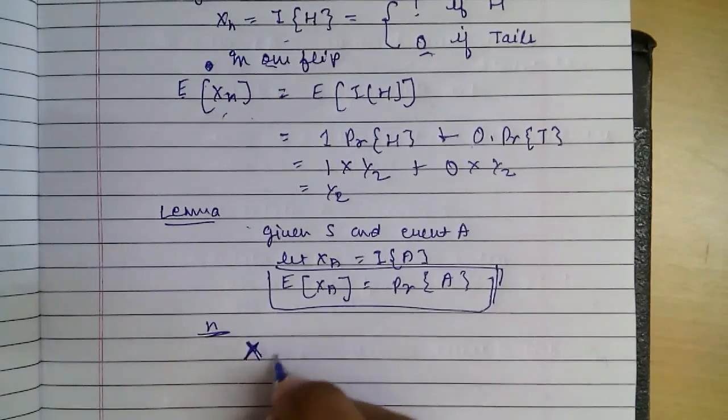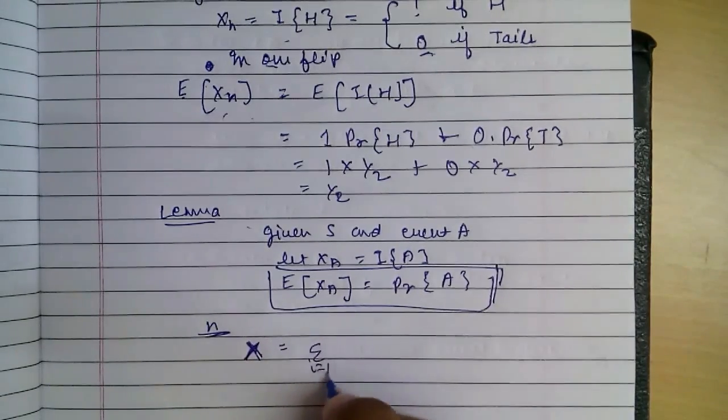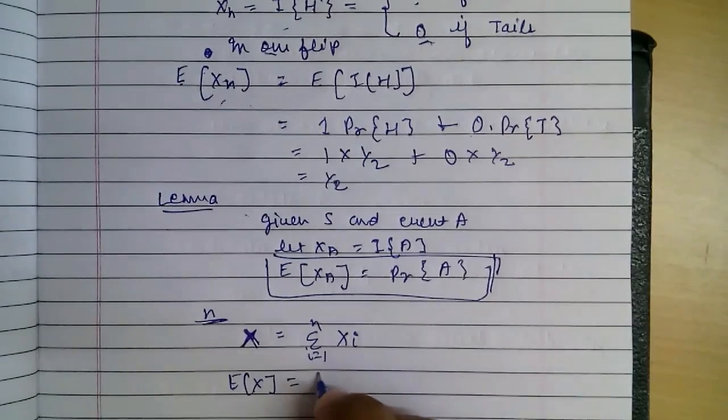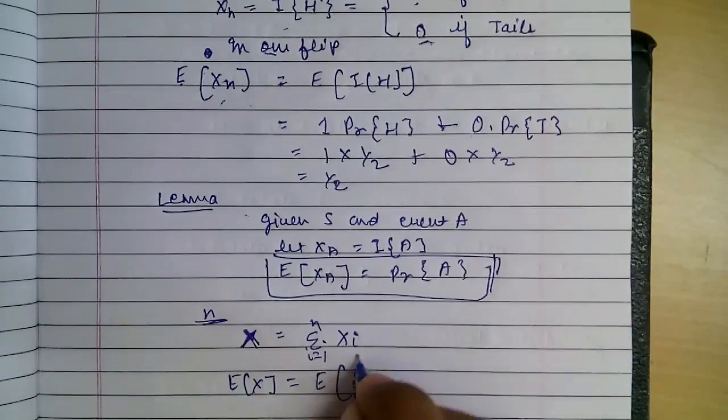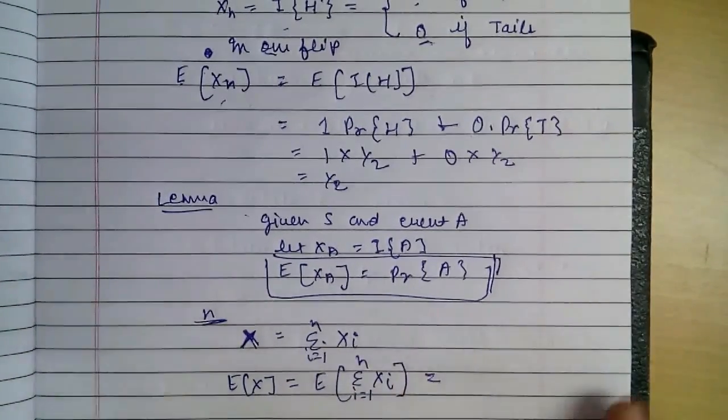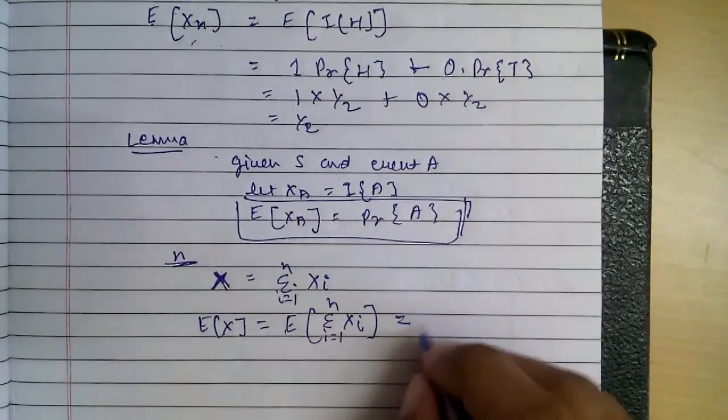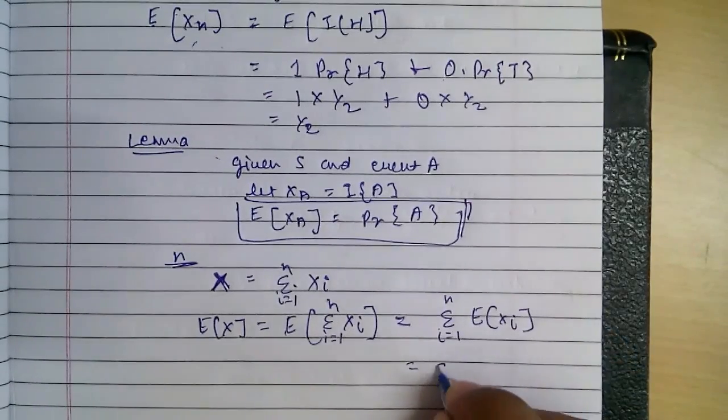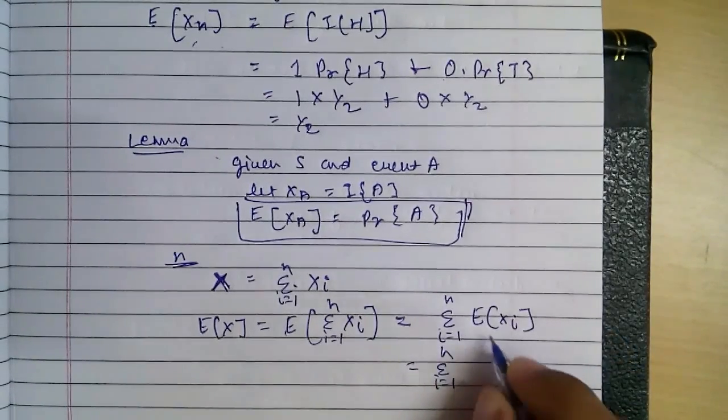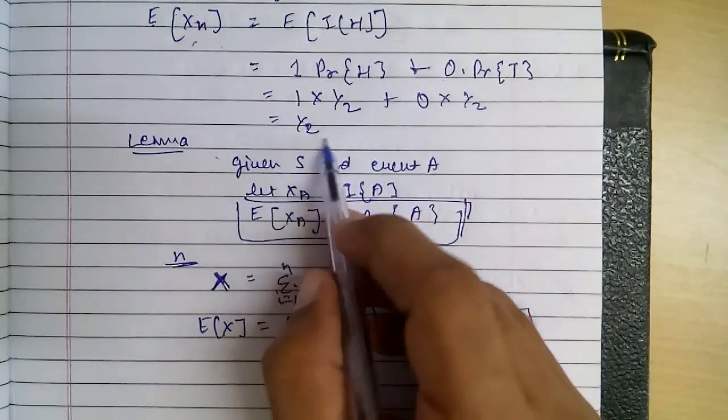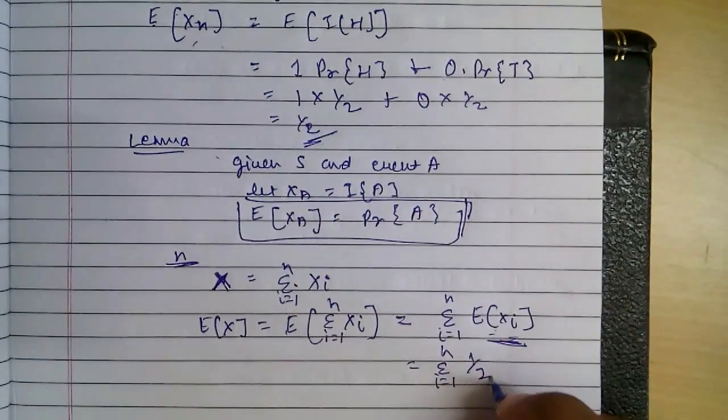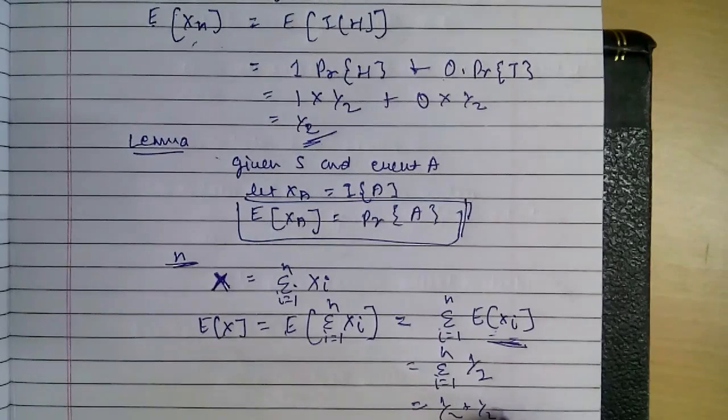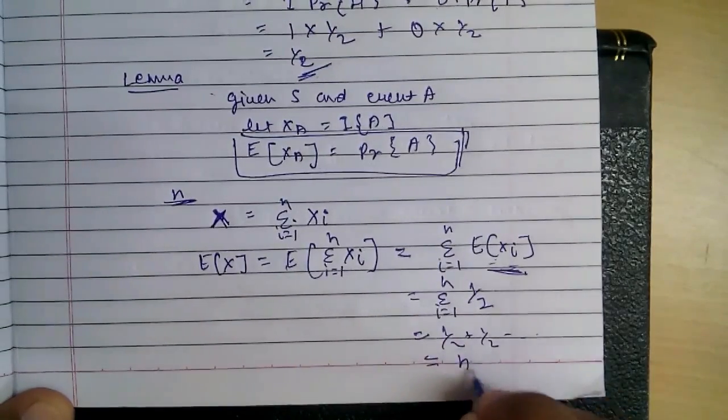X equals to Sigma of 1 to n of XI. Expectancy on both sides, solving it by linearity, it goes in expectancy of XI then Sigma equal to 1 to n. What was this for heads, it was 1 by 2, so putting 1 by 2 and Sigma of 1 to n, so it becomes 1 by 2 plus 1 by 2 and so on, so finally we will get n by 2.